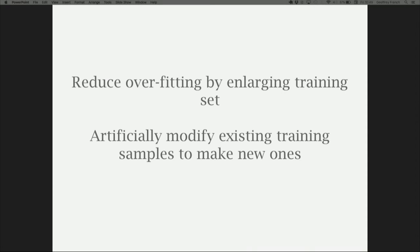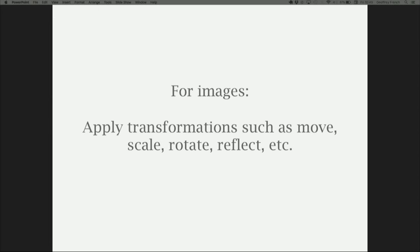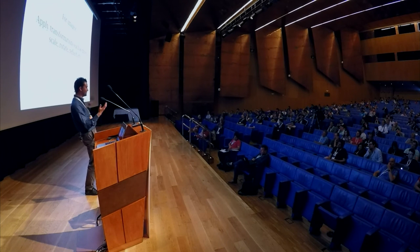Dataset augmentation: because training neural networks is notoriously data hungry, you want to reduce overfitting and enlarge your training set. You can do this by artificially modifying existing training samples and adding those modified versions to the training set. For images, you shift it over by a certain amount, up and down, rotate a bit, scale a little, or horizontally flip it — but be careful with that one. For example, if you have images of people and you vertically flip them upside down, that will screw up your training. When doing dataset augmentation, think carefully about what transformations make sense for your data.